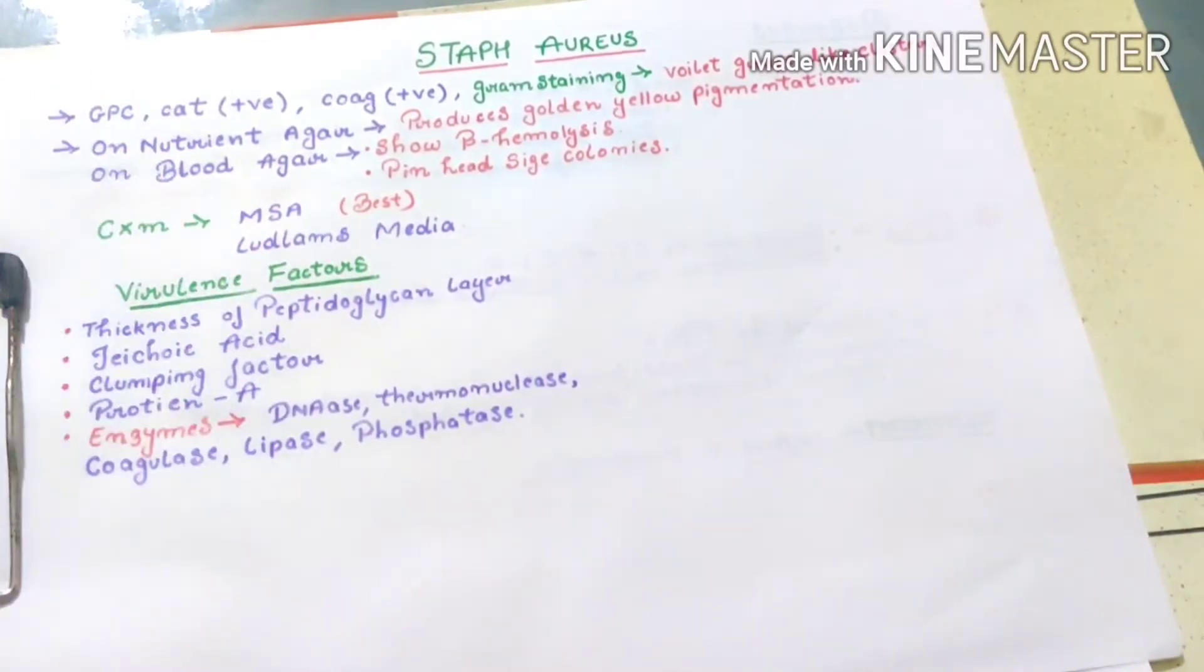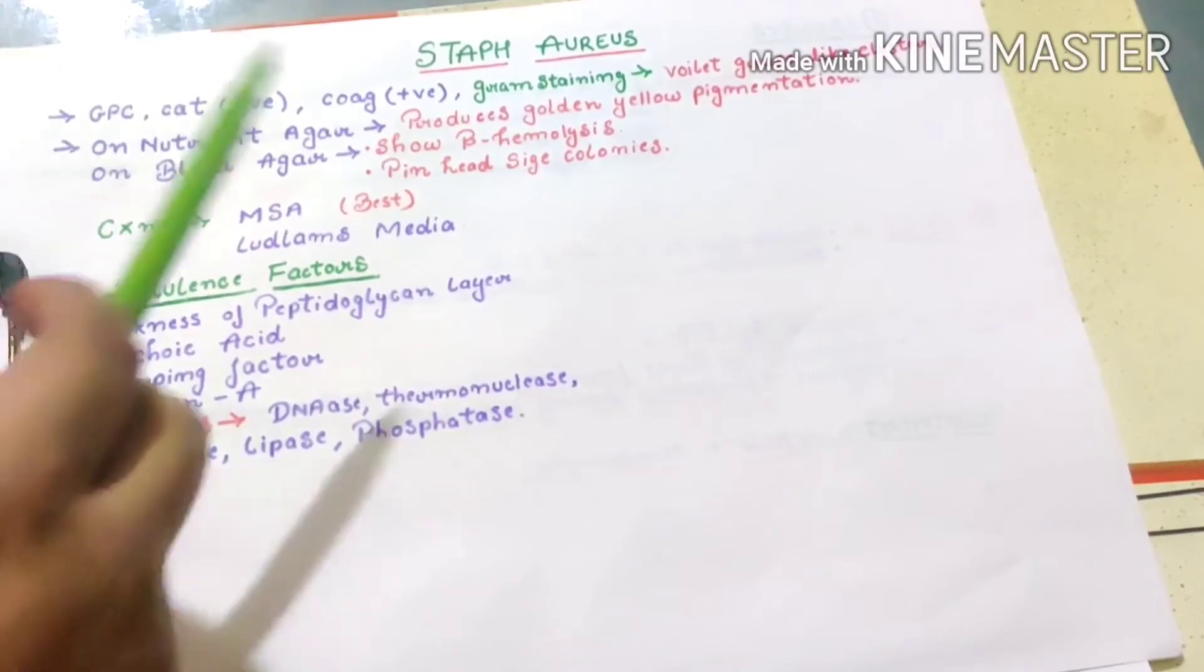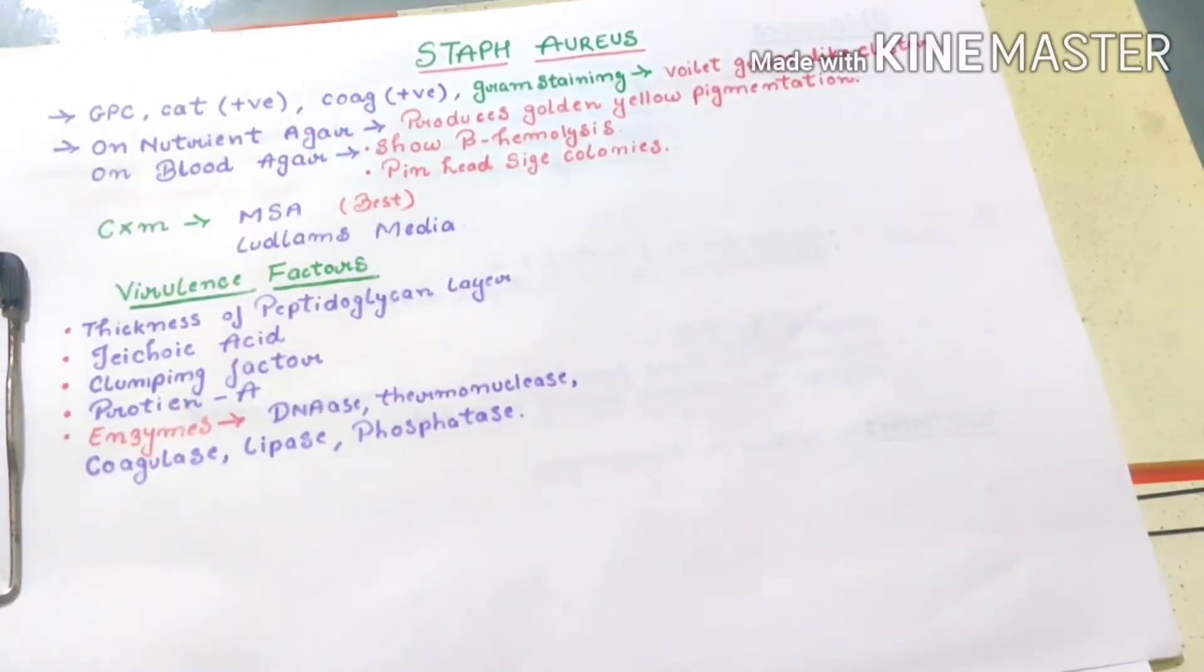Firstly, it is a GPC, that means gram positive cocci, and it is a catalase positive organism as well as coagulase positive. In gram staining, it appears as violet grape-like structure.